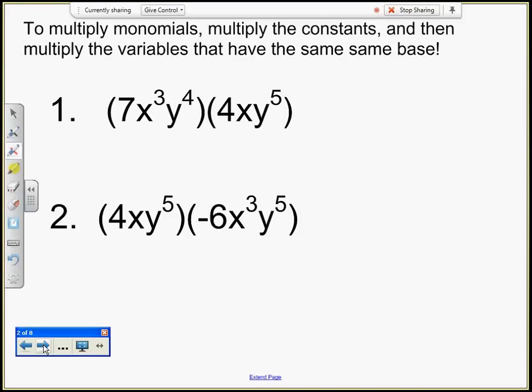I've got two monomials. I'm going to multiply my constants first, or coefficients first. So that's 7 times 4. It's going to give me 28. Then I'm going to do my variables that have the same base. Here's an x factor here and an x factor here. So I've got x to the third times x to the first power. That's going to give me x to the fourth power because I add the exponents. y to the fourth times y to the fifth is y to the ninth.